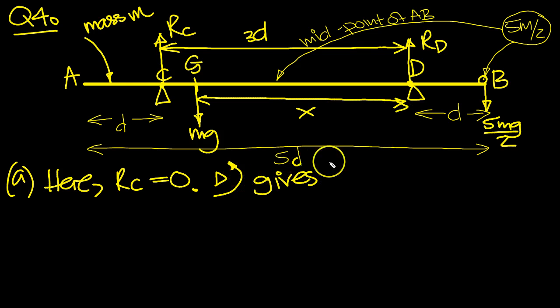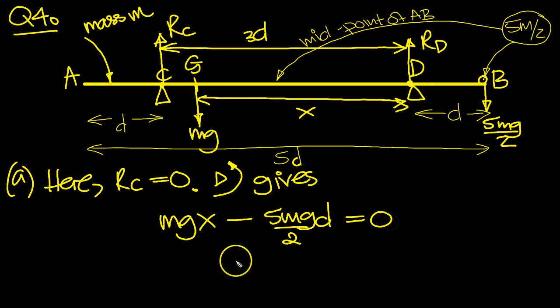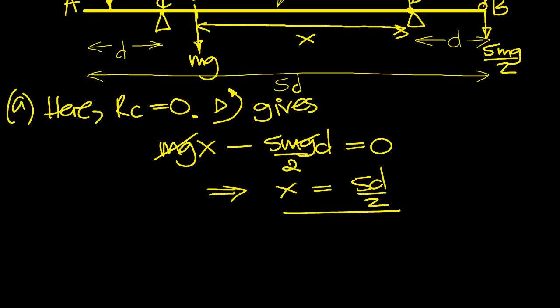So the moment anticlockwise will be MGX minus, this is a clockwise moment, 5MG over 2 times its distance away from D, which is D. So that equals 0. We can cancel by MG all the way through. Move the 5D over 2 to the other side, so X equals 5D over 2.